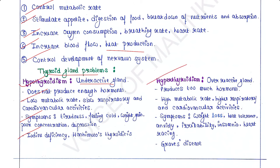Hyperthyroidism: when the thyroid gland is overactive and produces too much hormones. It results in high metabolic rate and higher respiratory and cardiovascular activities. Symptoms include weight loss, heat intolerance, anxiety, irritability, insomnia, and heart racing. Graves' disease is the most common reason of hyperthyroidism.